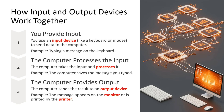Now let's look at how input and output devices work together. Step one: you provide the input. You use an input device, like a keyboard or mouse, to send data to the computer. For example, typing a message on the keyboard.